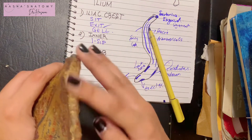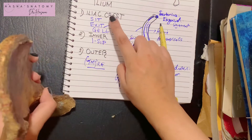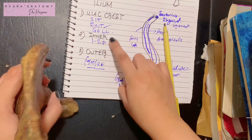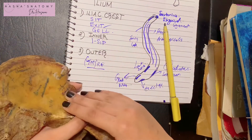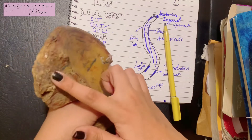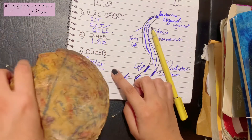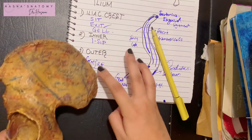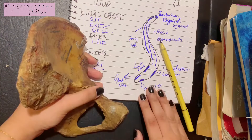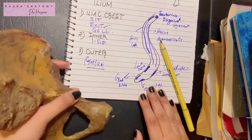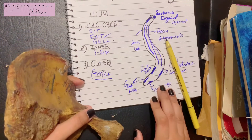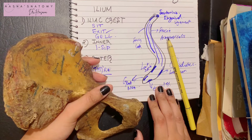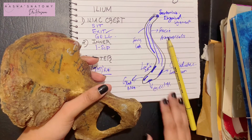So that was all for the attachments of the ilium bone. To summarize, there are three parts: the iliac crest with the SIT, EXIT, GEL mnemonics; the inner surface with the ISIP attachments; and the outer surface with the GMRF muscles. I really hope it was easy to understand the attachments of the ilium. Thank you so much for watching, and don't forget to subscribe to my channel.